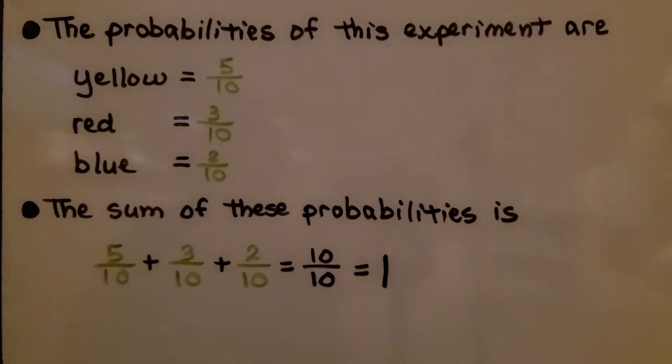The probabilities of this experiment are yellow is 5 tenths, red is 3 tenths, and blue is 2 tenths. The sum of these probabilities is 1. We add 5 tenths plus 3 tenths plus 2 tenths, which equals 10 tenths, which is equal to 1.